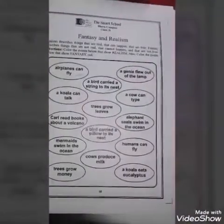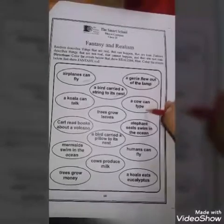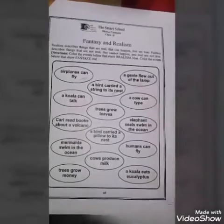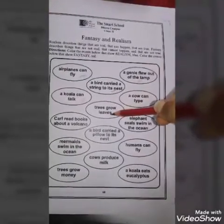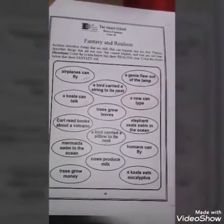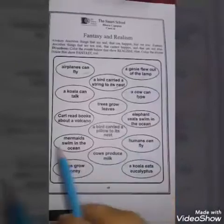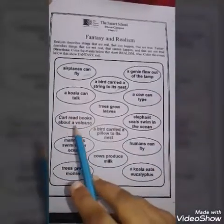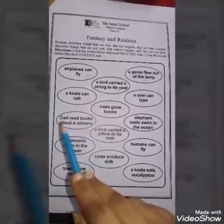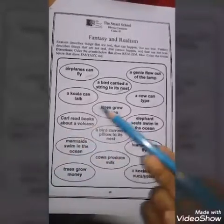A cow can type — no, it is a fantasy. Trees grow leaves — yes, it is realism. Coral read a book about a volcano — if you have to read a book, a person can read a book about a volcano, so it is a realistic thing.